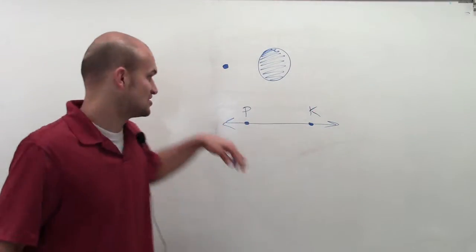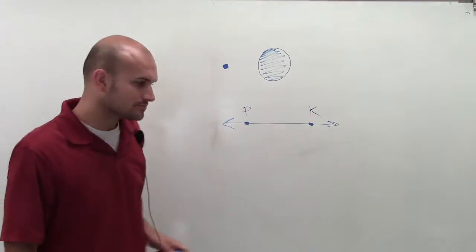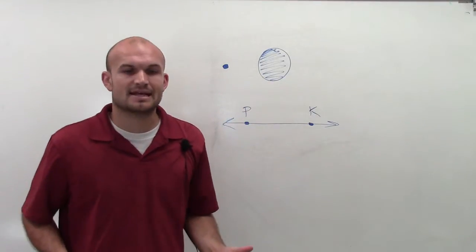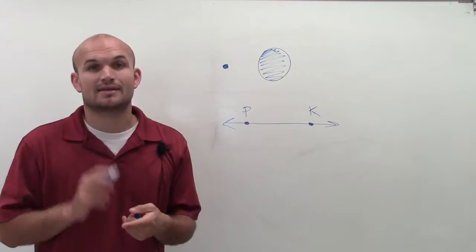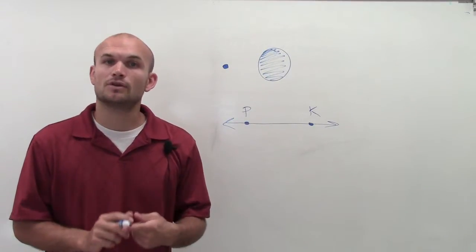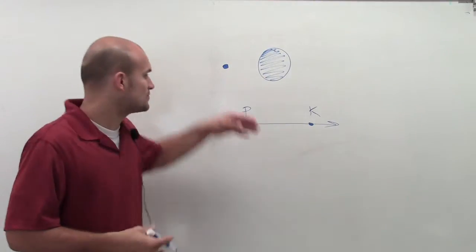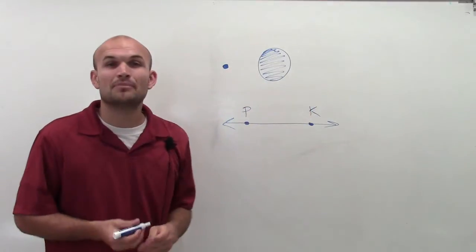And the way that we label points is with capital letters. So the main important thing I want you to understand about points is one thing: they don't have size. They only have their location. And when we label points, we just label them with capital letters.